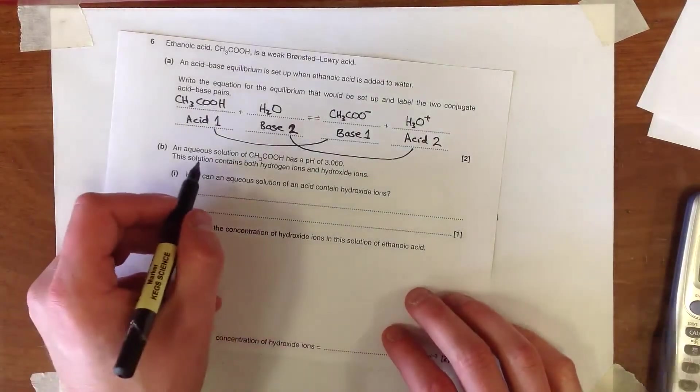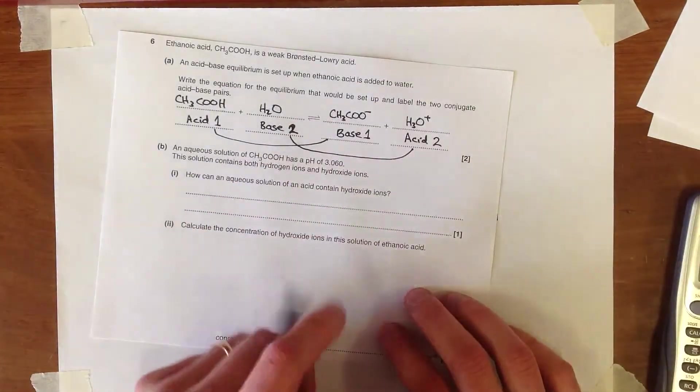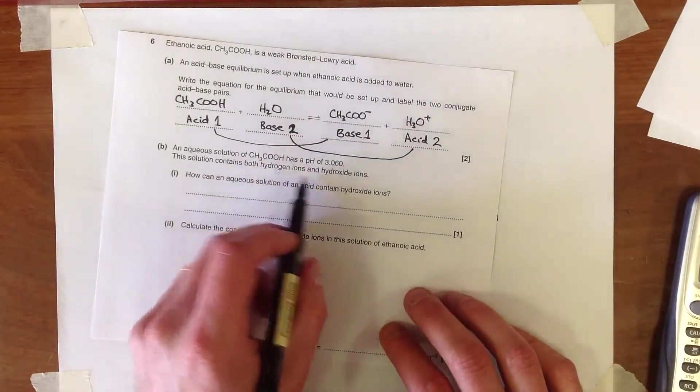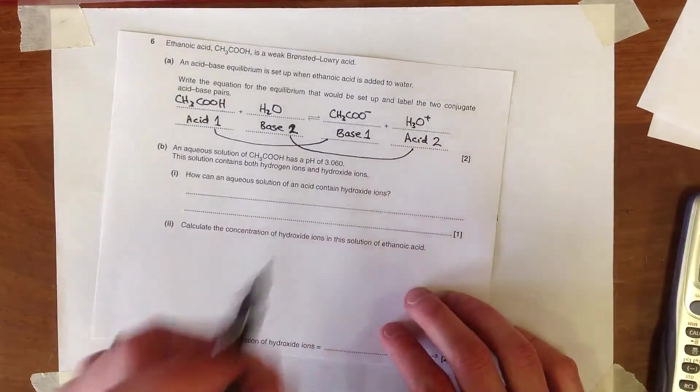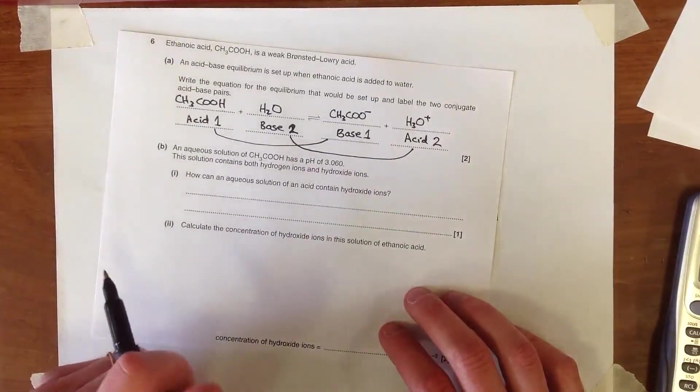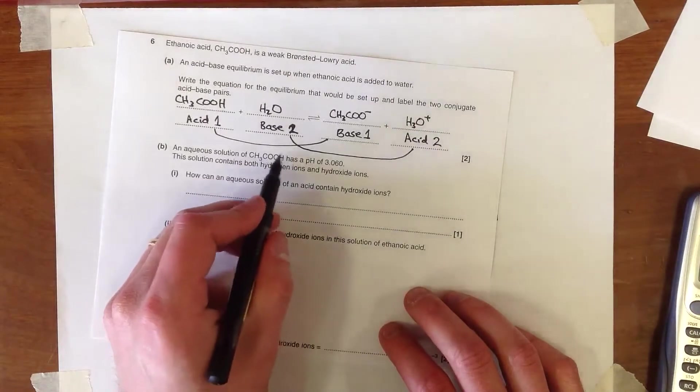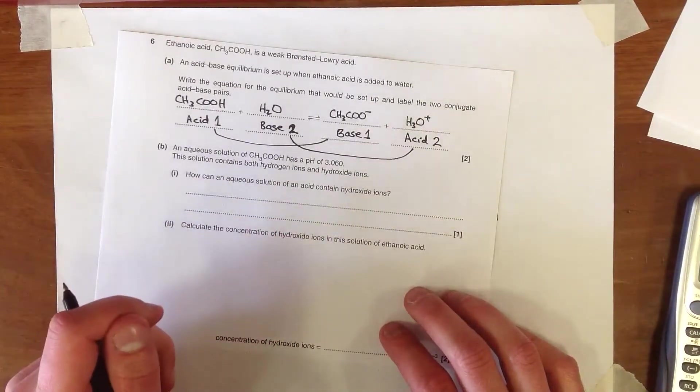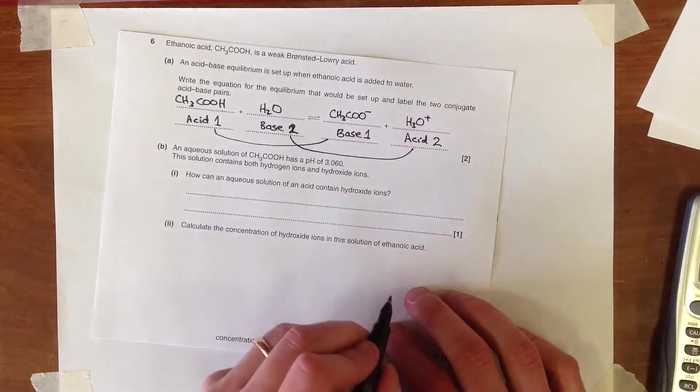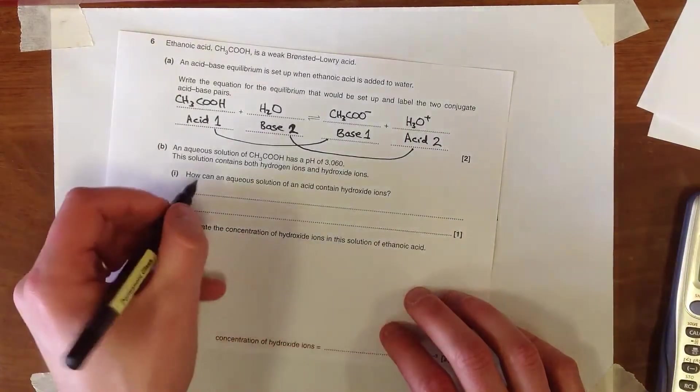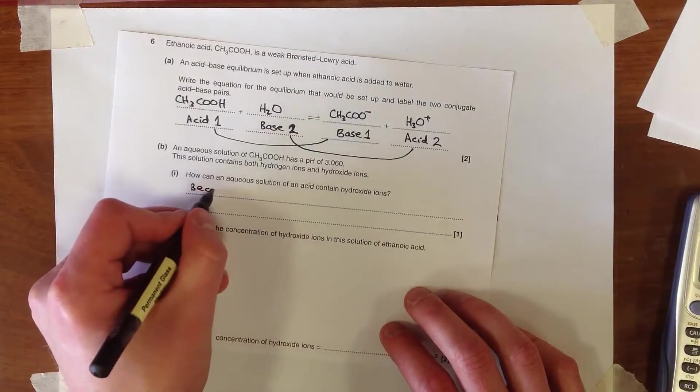The second bit of the question says to you that the ethanoic acid's got this pH and it contains both hydrogen ions and hydroxide ions. Now the hydroxide ions is a little bit of a strange one because we're used to acids being sources of H+, surely not OH-. But how can an aqueous solution contain hydroxide ions? It does so because water also dissociates.